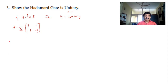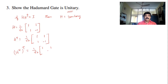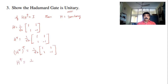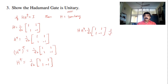Now let us take the complex conjugate H*. Since there are no complex numbers in H, H* = 1/√2 × [1, 1; 1, -1]. Next, I take the transpose to get the Hermitian conjugate H†. Transposing [1, 1; 1, -1] — row becomes column and column becomes row — gives the same matrix. Therefore H† = 1/√2 × [1, 1; 1, -1]. Now I have H†; let us compute H×H†.